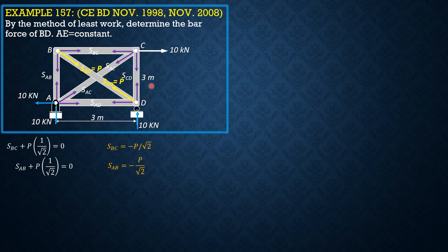We proceed to joint C. Summation of forces in X equals zero: 10 minus SCD minus SAC times 1 over square root of 2, minus SBC which is negative P over square root of 2, equals zero. So SAC equals 10 square root of 2 plus P.